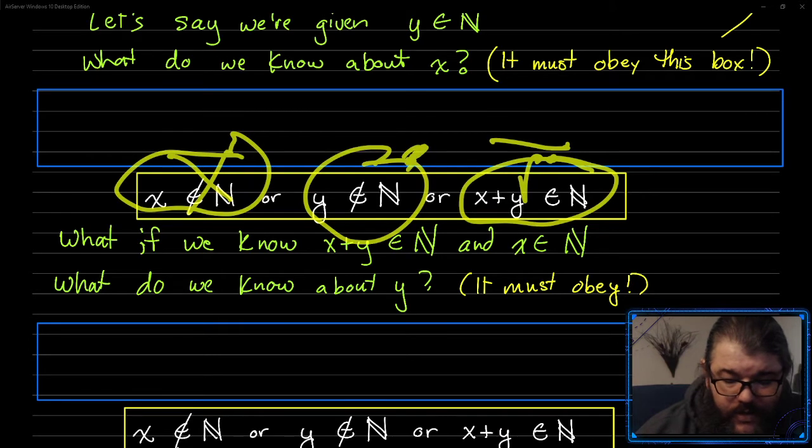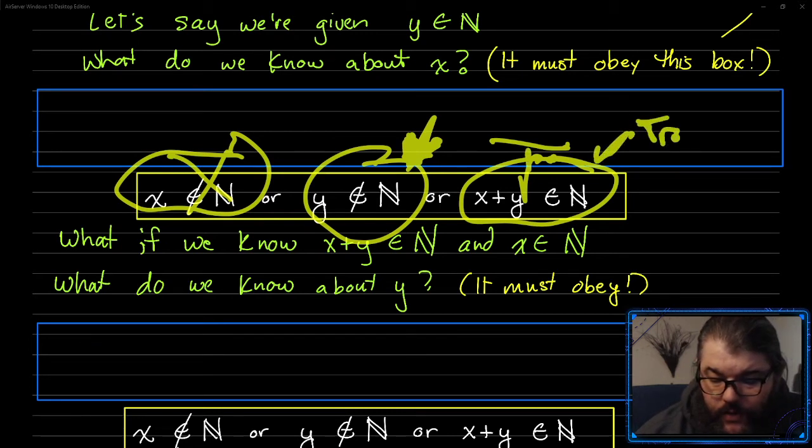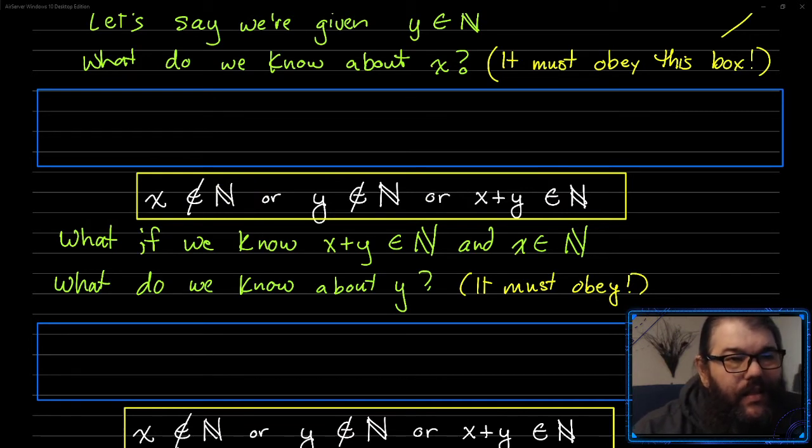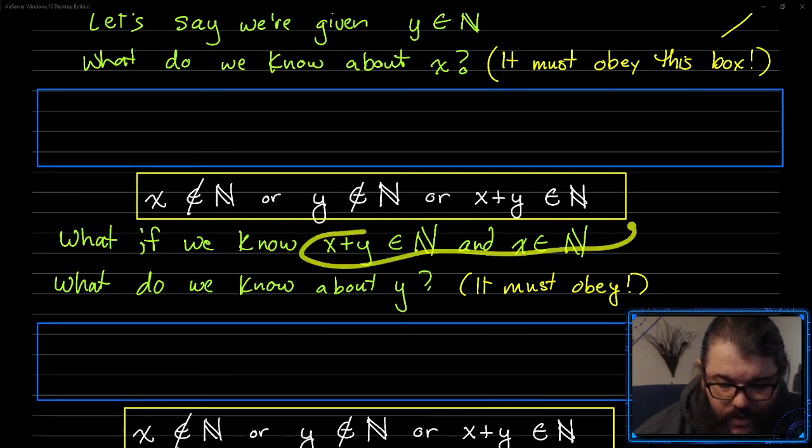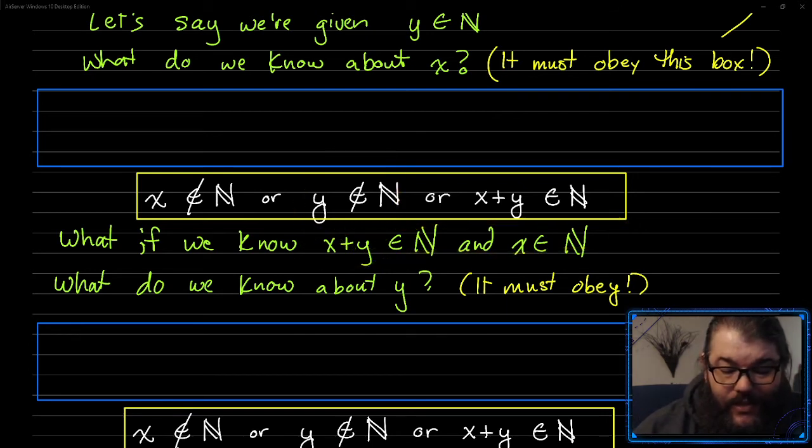It turns out that we actually don't necessarily learn anything about y. There might be some rules of this system that allow us to learn something about y. But because this is true, logically speaking, this is true, we don't actually learn much about y itself. And you might say, but I know there's no other way that we can get a y that isn't a natural number in this situation. There's no unnatural number, let's say, that we can use. And you know what? You'd almost be right.